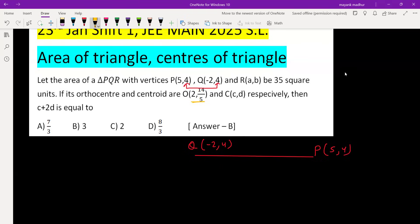Let's imagine the triangle. This is your R. Orthocenter is the meeting point of altitudes, so this will be one of the altitudes which will be a vertical line because PQ is horizontal. We can imagine one more altitude will be something like this. This point is your orthocenter which has coordinate 2 and 14 by 5.